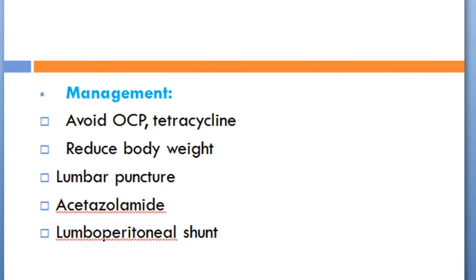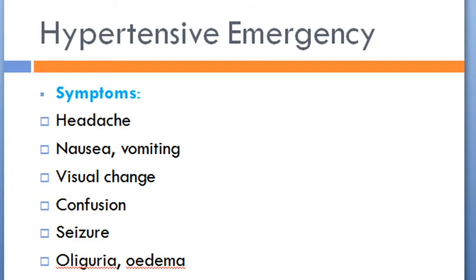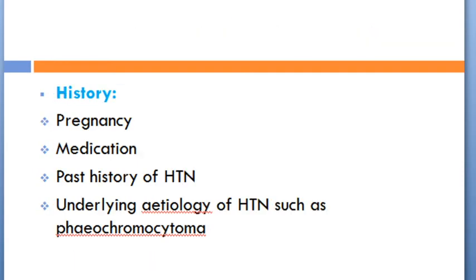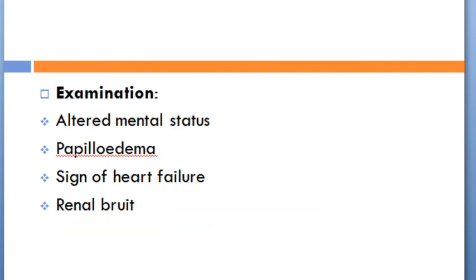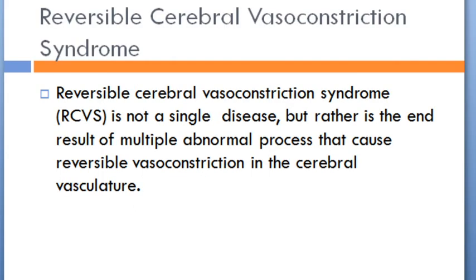Hypertensive emergency: symptoms include headache, nausea, vomiting, visual changes, confusion, seizure, oliguria, and edema. History includes pregnancy, medication, past history of hypertension, and underlying etiology such as phaeochromocytoma. On examination there may be altered mental status, papilledema, signs of heart failure, and renal bruits.